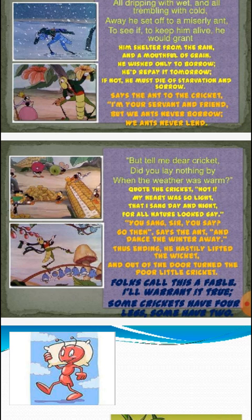The ants are asking the cricket what it did during summer and spring. The cricket says that during summer and spring, its heart was light, so it was singing, dancing, enjoying — just passing time. Now the ants say: 'Okay, then you were enjoying and dancing during summer and spring, so now go and dance during winter as well and chase away the winter season.' So with a heavy heart the cricket did not get anything, and with a heavy heart it is now returning to its home.